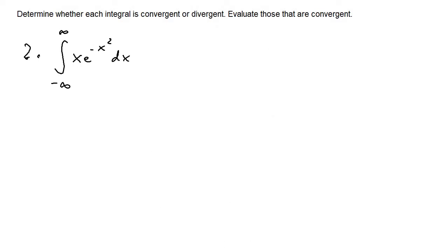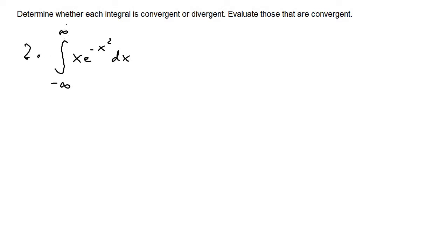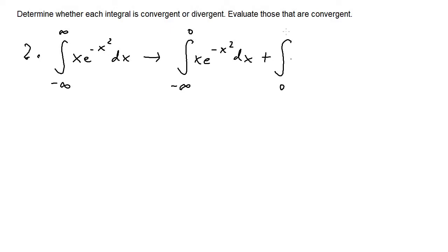For number two, we have the integral from negative infinity to infinity of x times e to the negative x squared, dx. This is a double improper integral since both bounds are infinite. When both bounds are negative infinity and infinity, we split it into two integrals using an intermediate value — in this case, zero — giving two separate integrals, each involving one infinite bound.